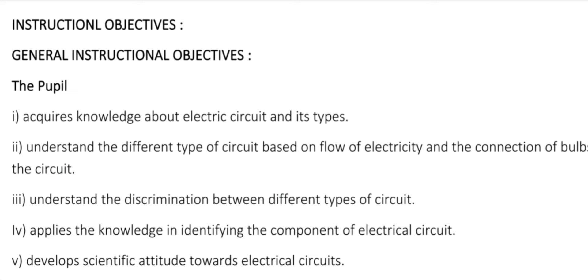Students learn discrimination between different types of circuits — parallel circuits, series circuits, etc. They apply the knowledge in identifying the components of electric circuit. After the lesson is over, they develop a scientific attitude towards electrical circuits. These are the general instructional objectives: knowledge, understanding, application, and skills.